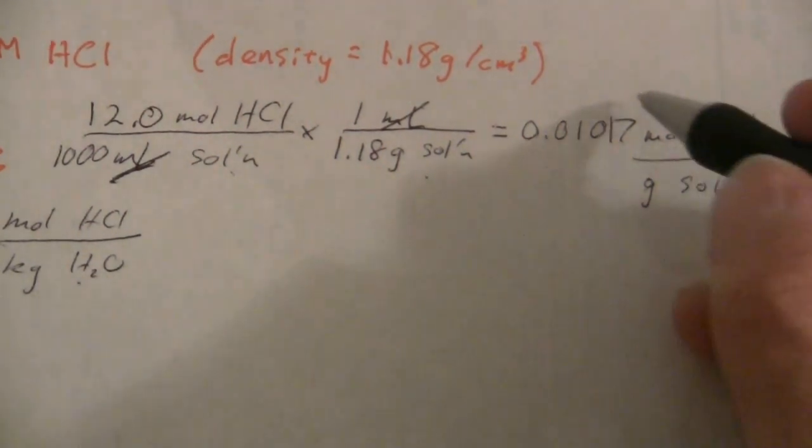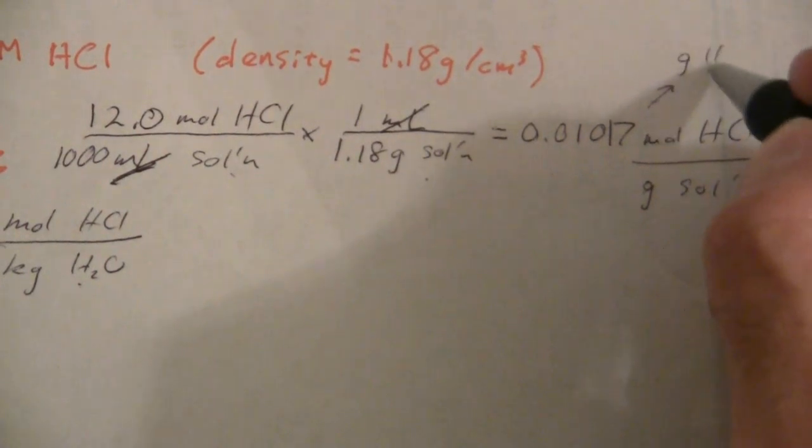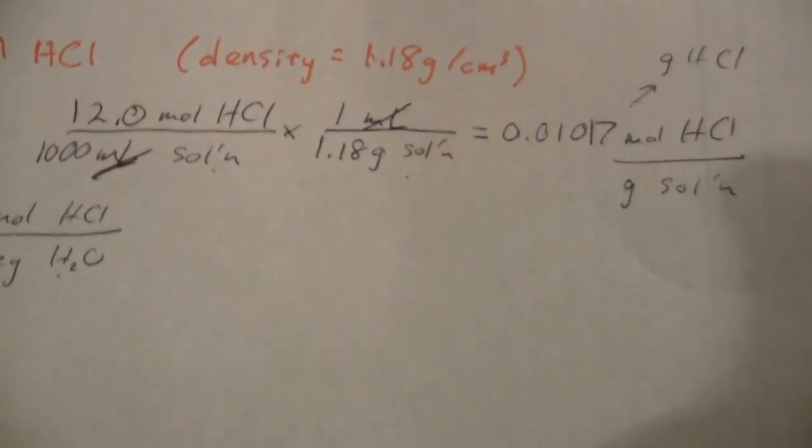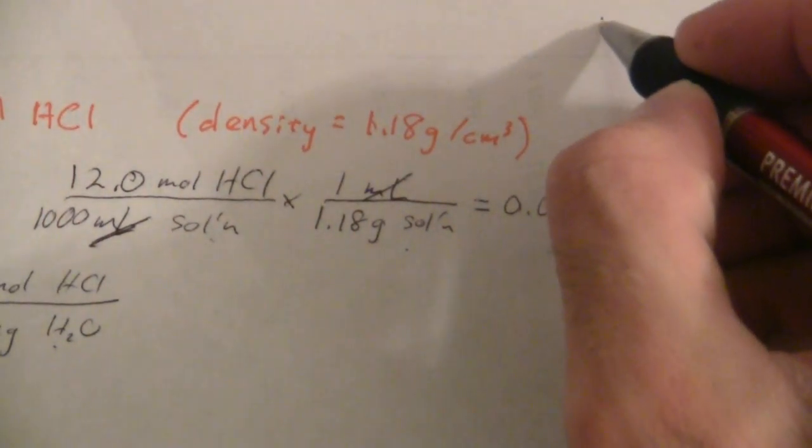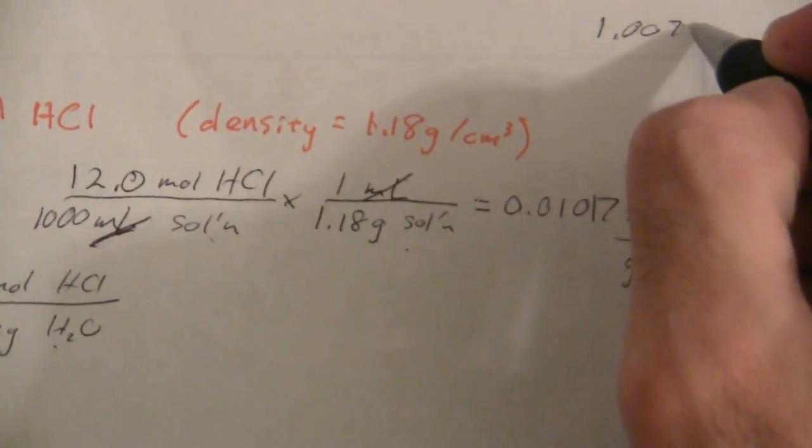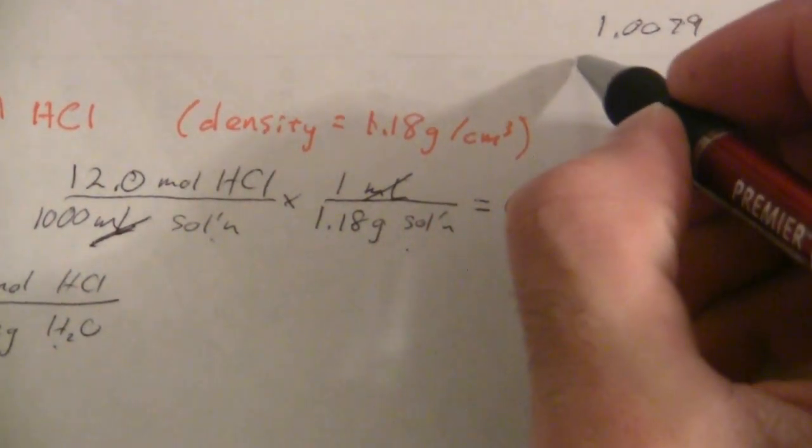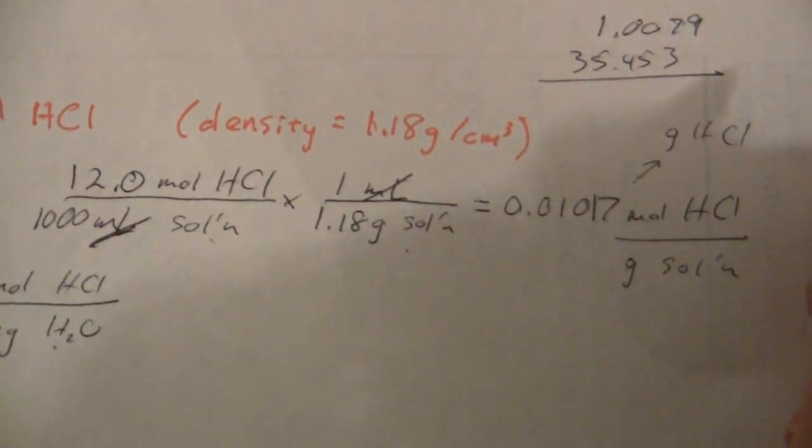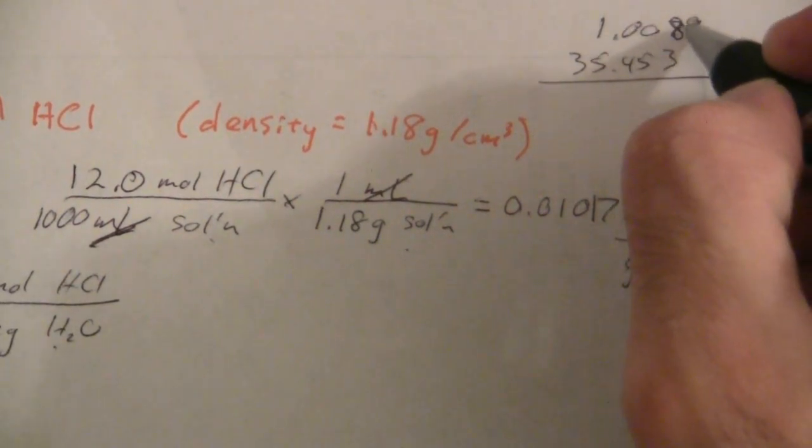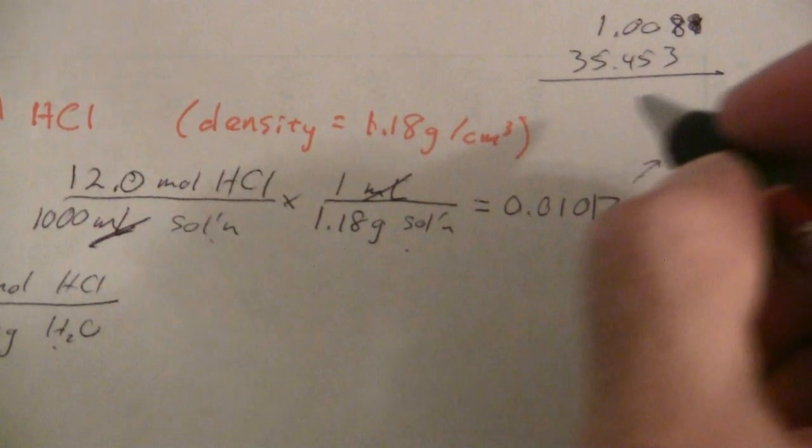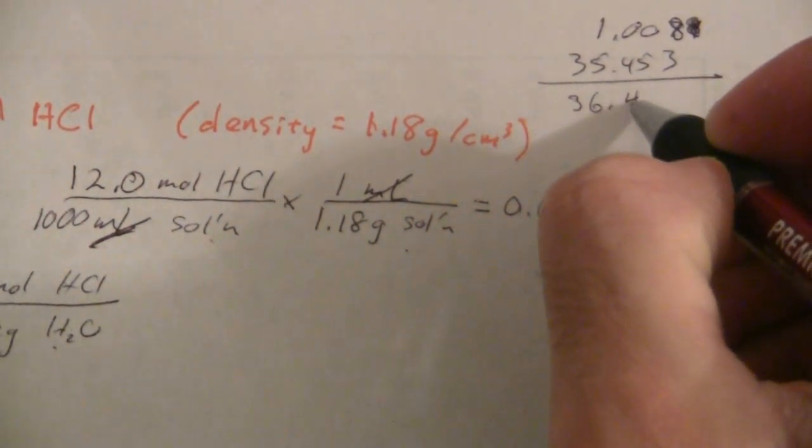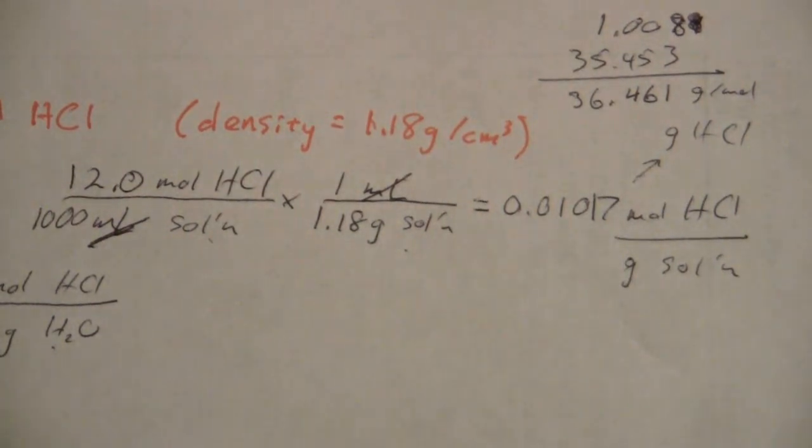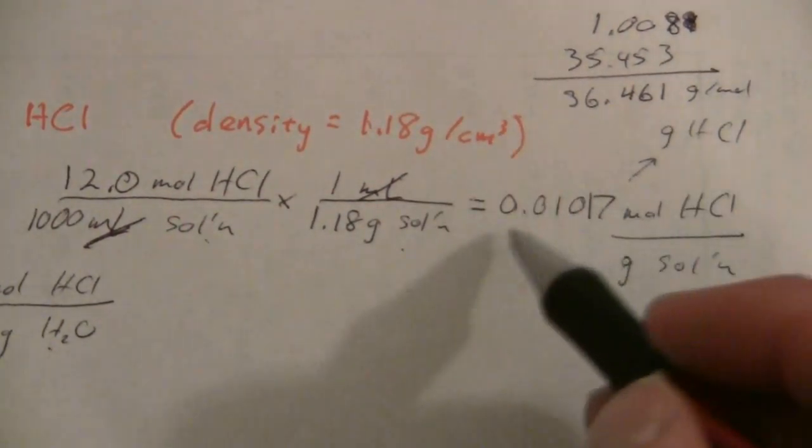So now what I need to do is convert this to grams of HCl, and in order to do that I need its molar mass which of course I can get from the periodic table. And I have hydrogen is 1.0079 and chlorine is 35.453. So if I add these up, I'll go ahead and round this to eight and just leave it at three decimal places, I'll have 36.461. Okay, that's grams per mole.